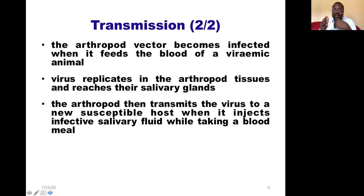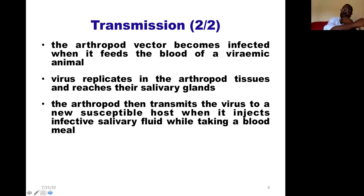So you need three things: the infected animal that carries the virus, then the vector — mainly the arthropod — that will bite the infected animal first, take the germ, and infect the human host, from which the human host becomes infected.